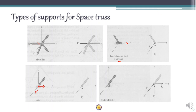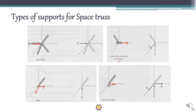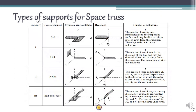The last support type is a ball and socket arrangement, similar to a hinge. There is a fixed socket with a ball inside that is not able to move in any direction. Since the ball is restrained in all three directions, reactions exist in all three directions. This completes the description of support types in space trusses.